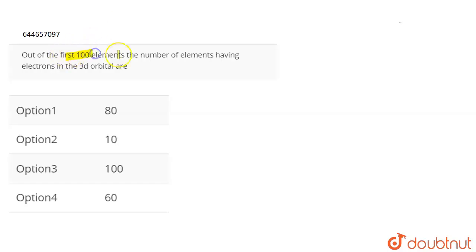The question is, out of the first 100 elements, the number of elements having electrons in the 3D orbital are?